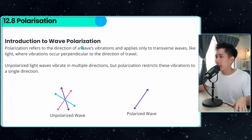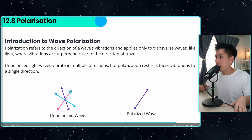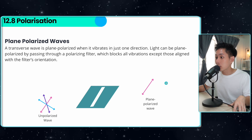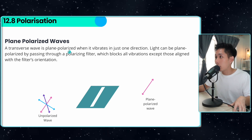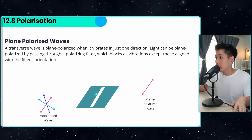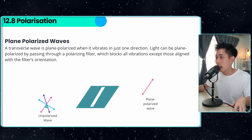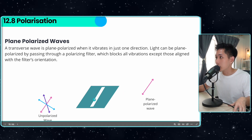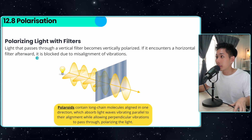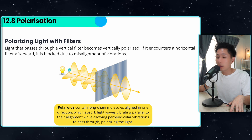The last topic is polarization. It refers to the direction of a wave's vibration, and it applies only to transverse waves. An unpolarized wave vibrates in multiple directions. Polarization restricts this vibration to only one direction. An unpolarized wave becomes plane-polarized when it vibrates in just one direction. This can be achieved by passing light through a polarizing filter, which blocks all vibrations except those aligned with the filter's orientation. From the diagram, only the pink-coloured component passes through because it is aligned with the polarizing filter.